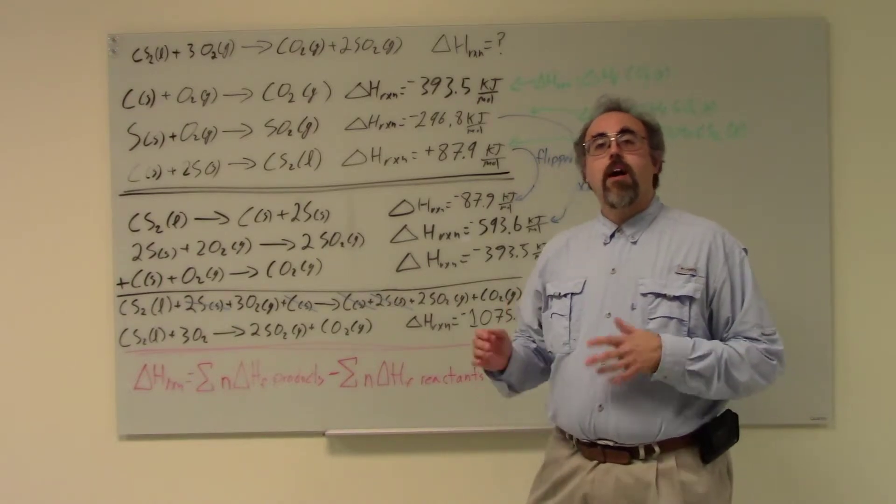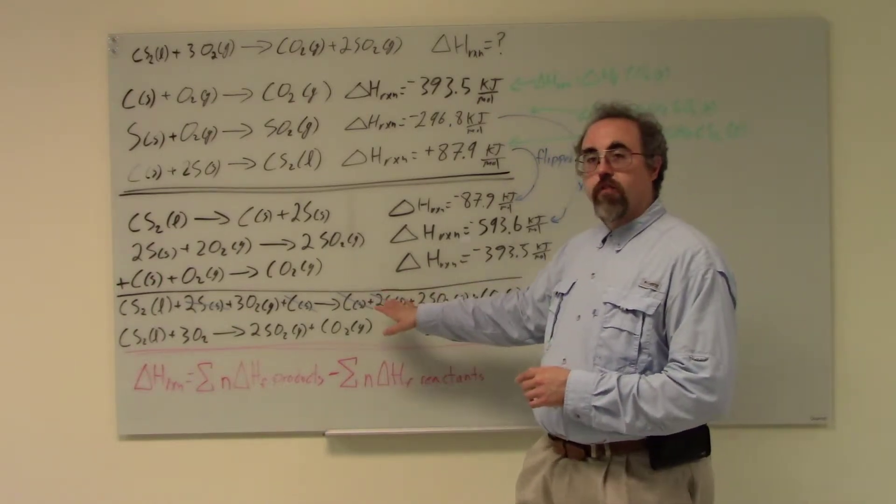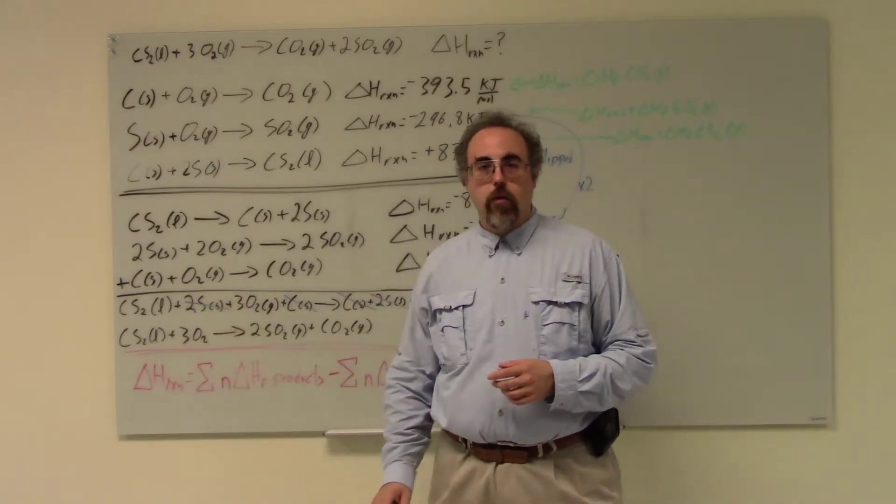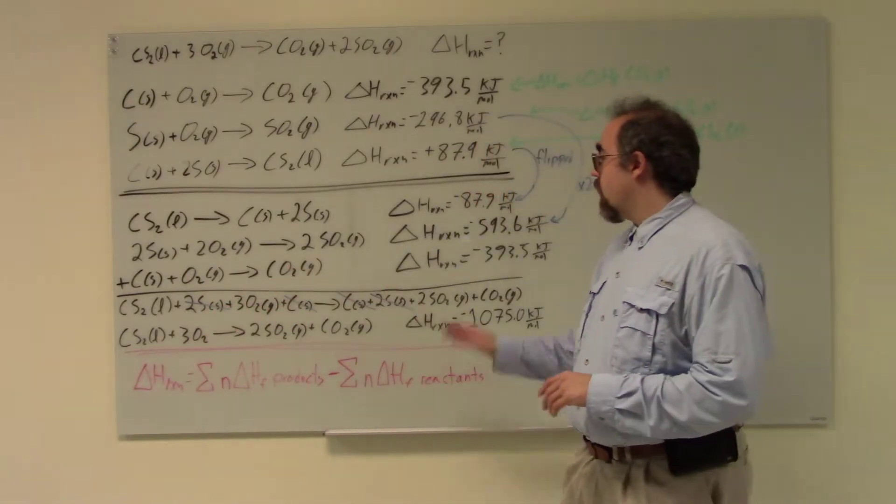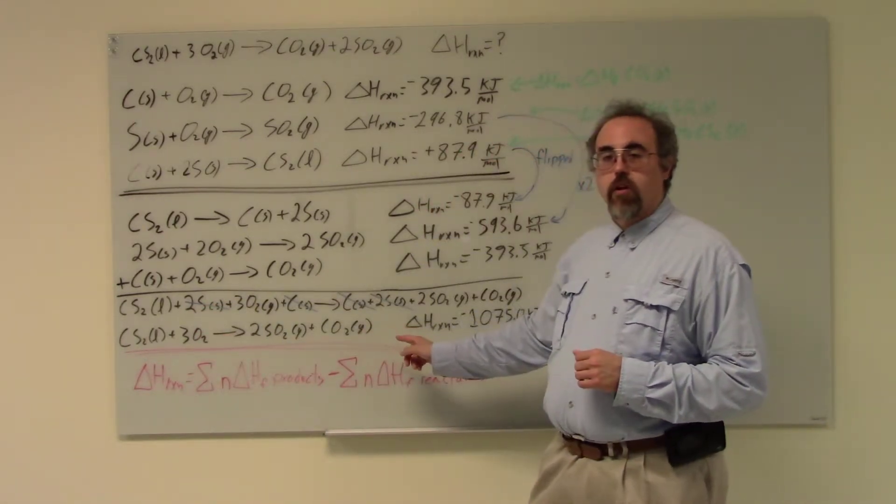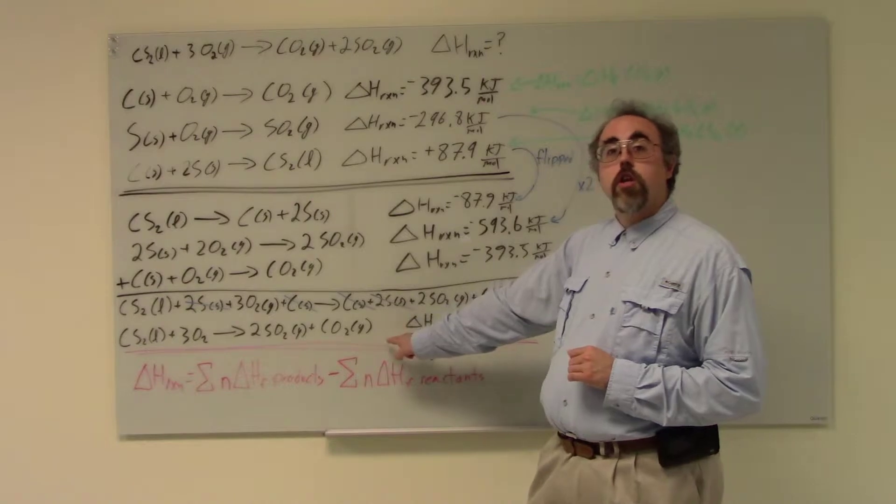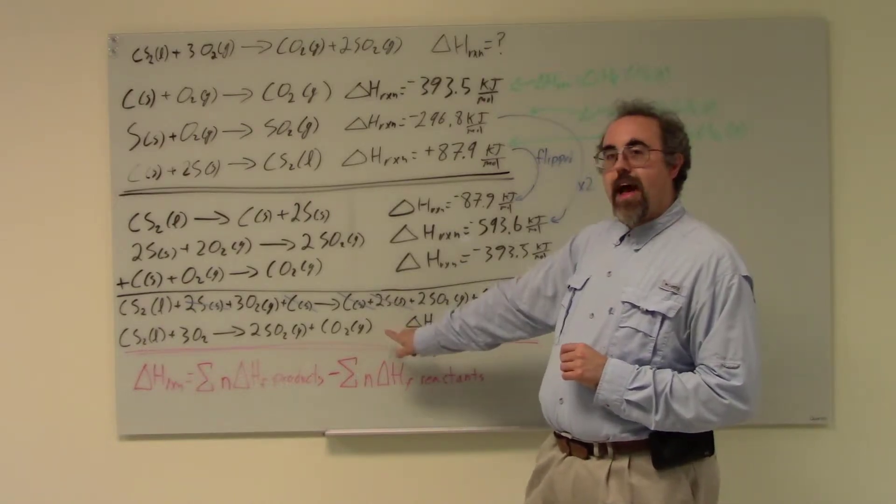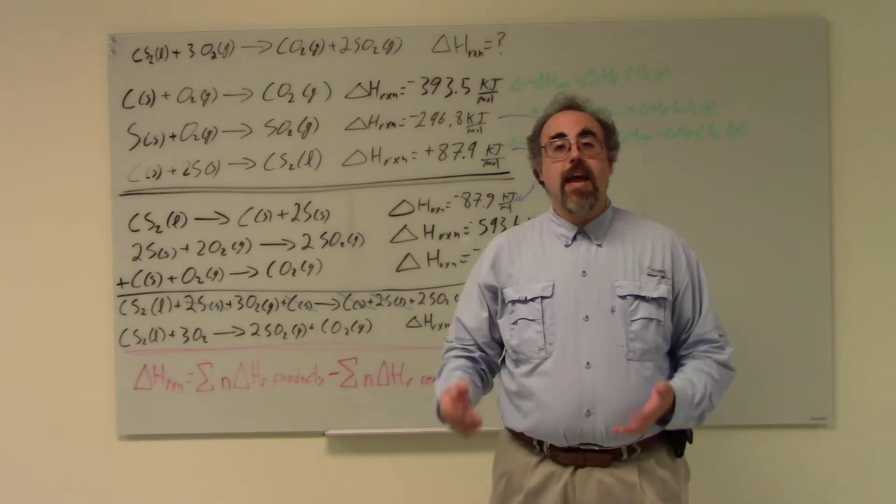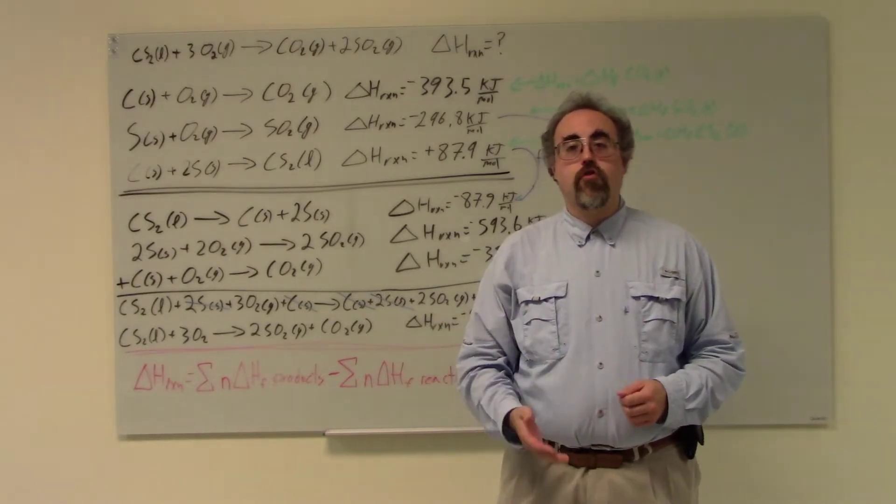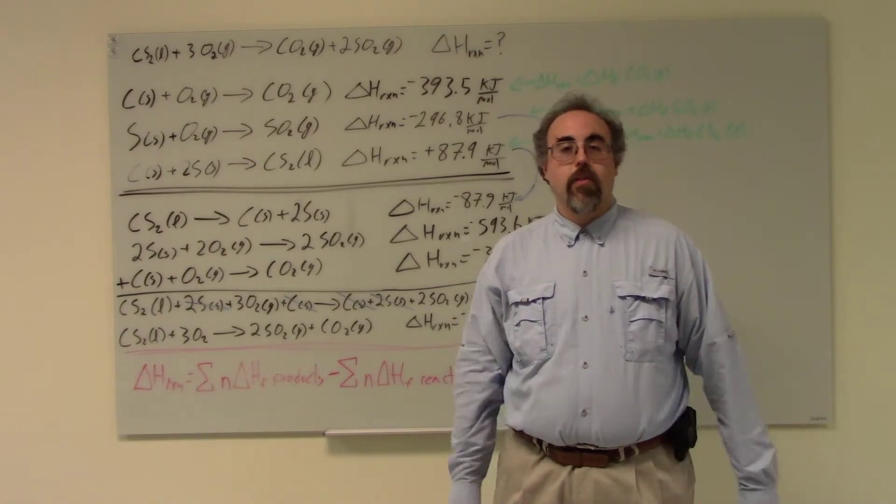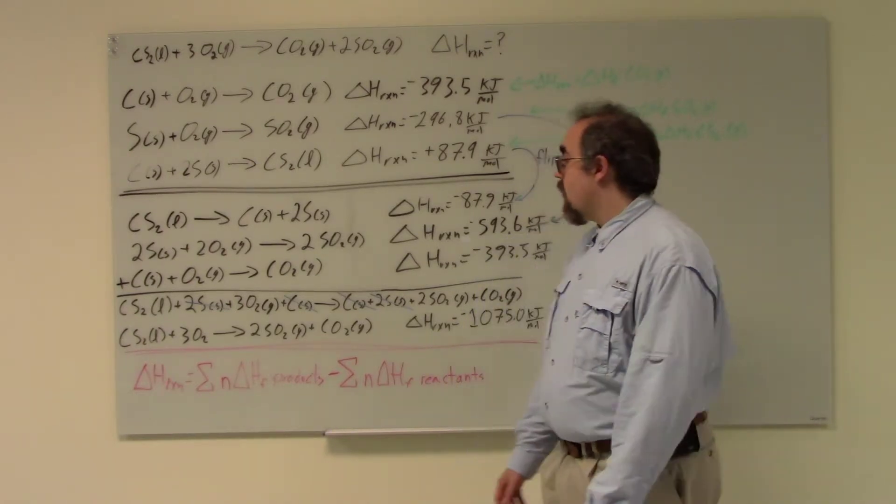And I go ahead and rewrite this equation. The sum of these three with all of the parts that are duplicated canceled out. Now, this gives me a new reaction that should look a wee bit familiar. That is that. Basically I'm taking the reactions, I'm rearranging them so that I can create the reaction and I don't know what the delta H is.